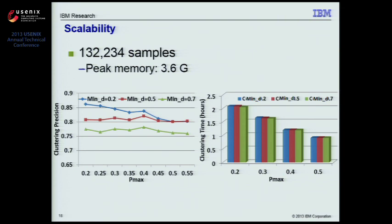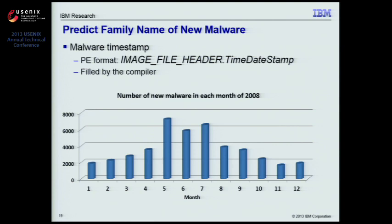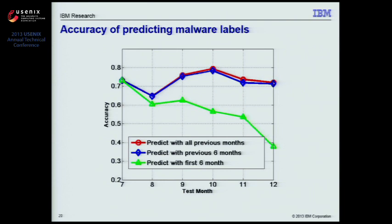So far, we have evaluated MaltonX using malware data with known family labels. A more realistic setting for MaltonX is trying to predict the family label for new incoming malware based on their association with existing clusters. To simulate such a scenario, we obtain the creation time for malware samples from the timestamp in their image file header — a standard header included in every Windows executable set by the compiler during compilation time.